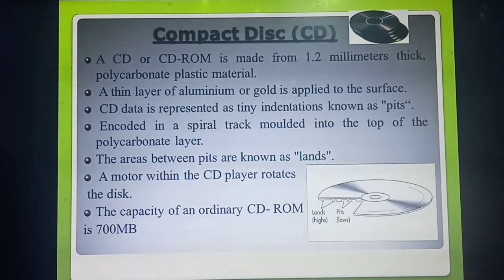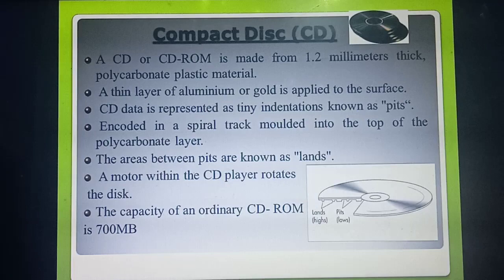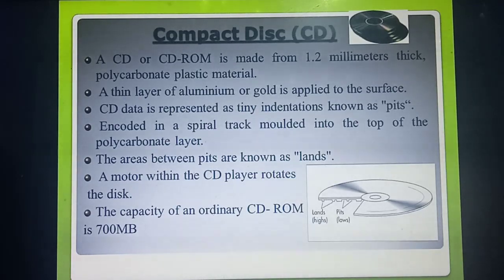CD is made up of polycarbonate plastic metal. If you see the CD, it is just like a glitter — gold or silver, showing rainbow colors. How is that? A thin layer of aluminum or gold is applied on the surface of the CD, so the CD glitters with different colors. What are the things applied on the surface of the CD? A thin layer of gold or aluminum is applied on the surface of the CD.